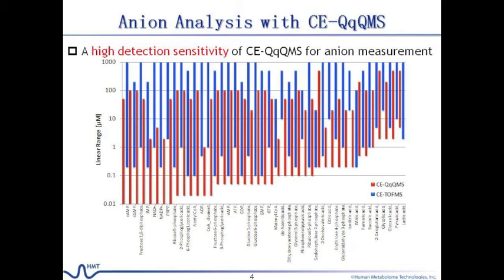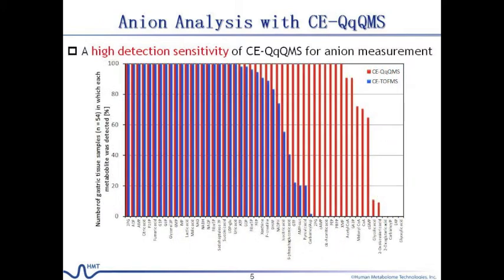Most glycolytic, pentose phosphate pathway, and TCA intermediates are anions and exist in relatively low concentrations in typical biological samples such as cells, tissues, and biofluids. Therefore, accurate measurement of these anionic metabolites using conventional metabolomics technologies has been challenging. HMT developed a novel analysis method for simultaneously quantifying dozens of anionic compounds using CE combined with tandem mass spectrometry. With this method, the detection limit of 45 compounds increased from 0.5 to 701.8 fold, where only lactate showed a decreased detection limit in CE-MS/MS. In the case of analyzing gastric tissue samples, 60 metabolites which were undetected by CE-TOF-MS in most samples were detected by the new method.